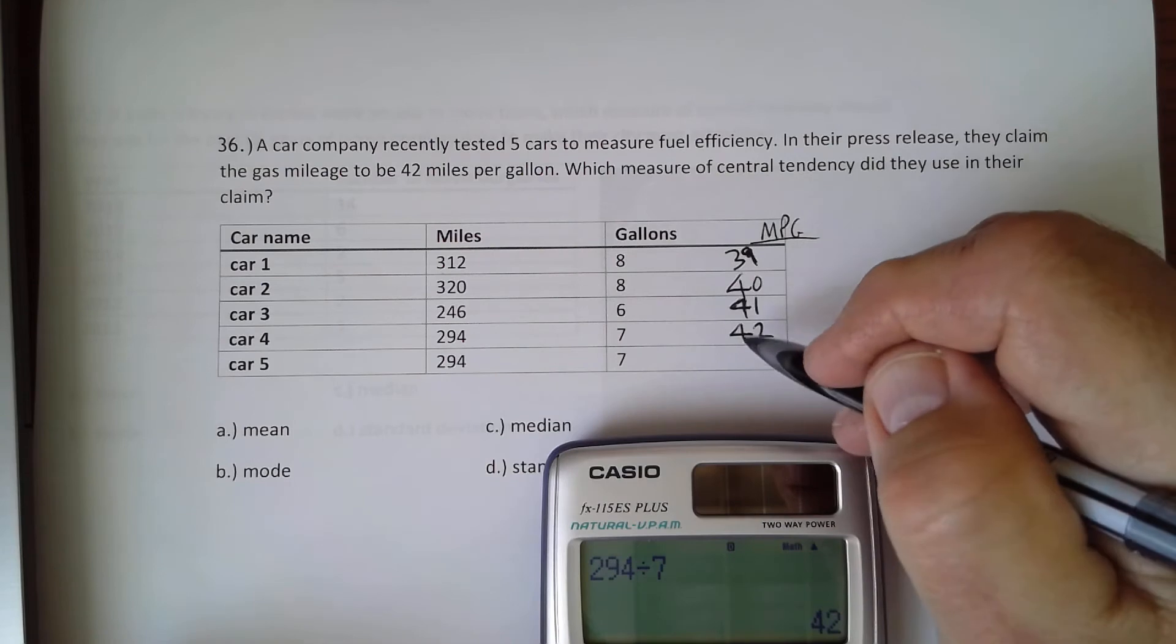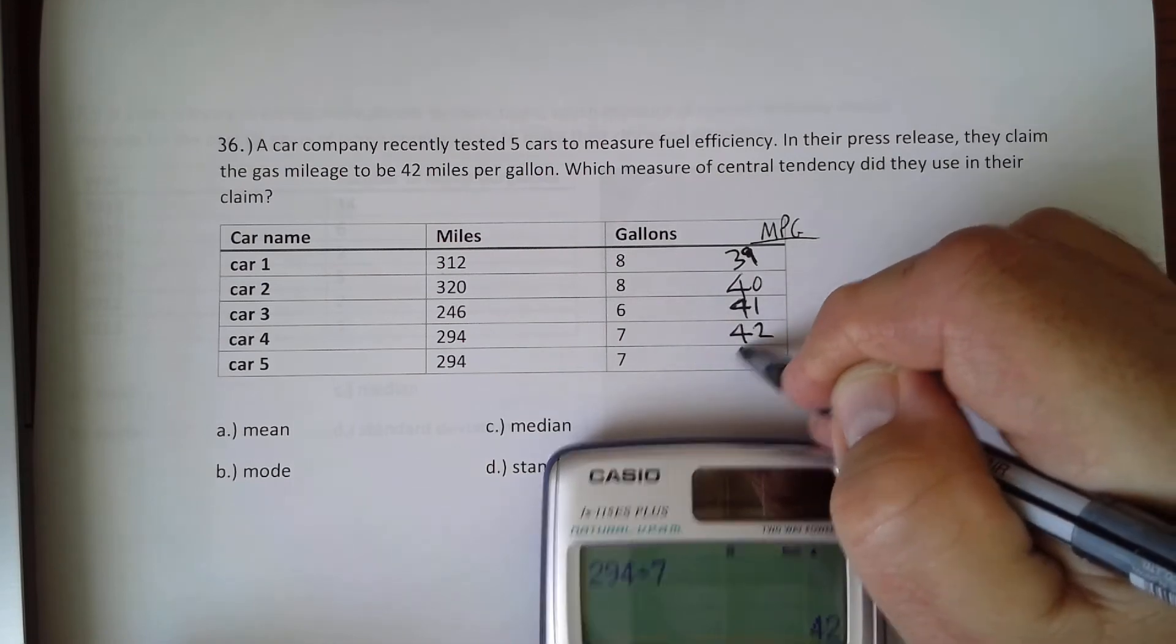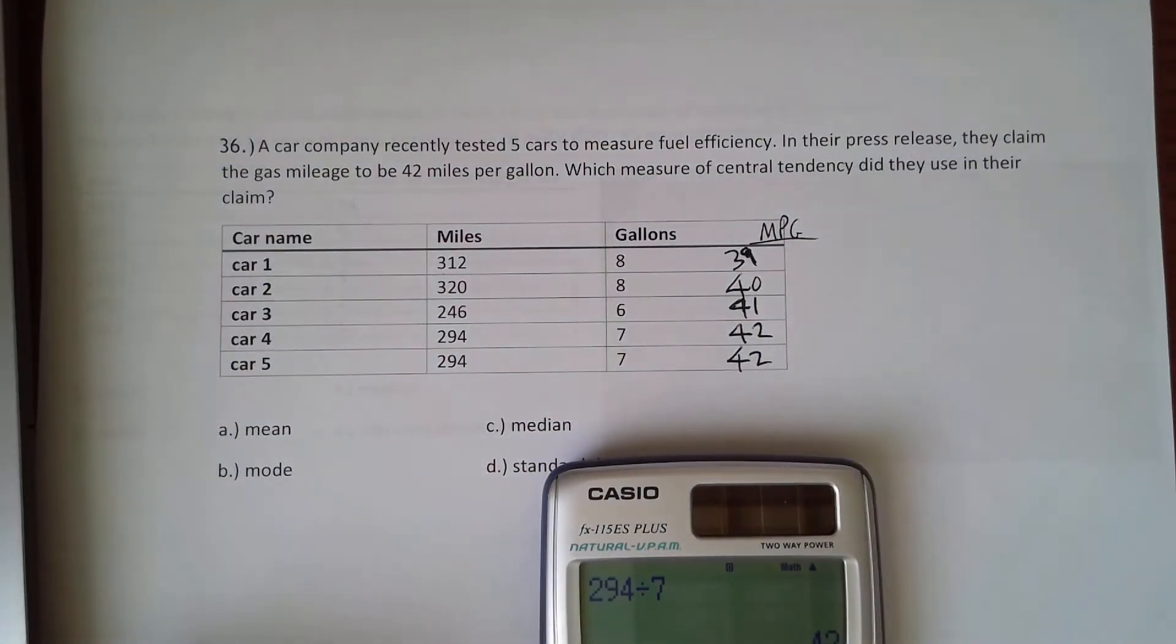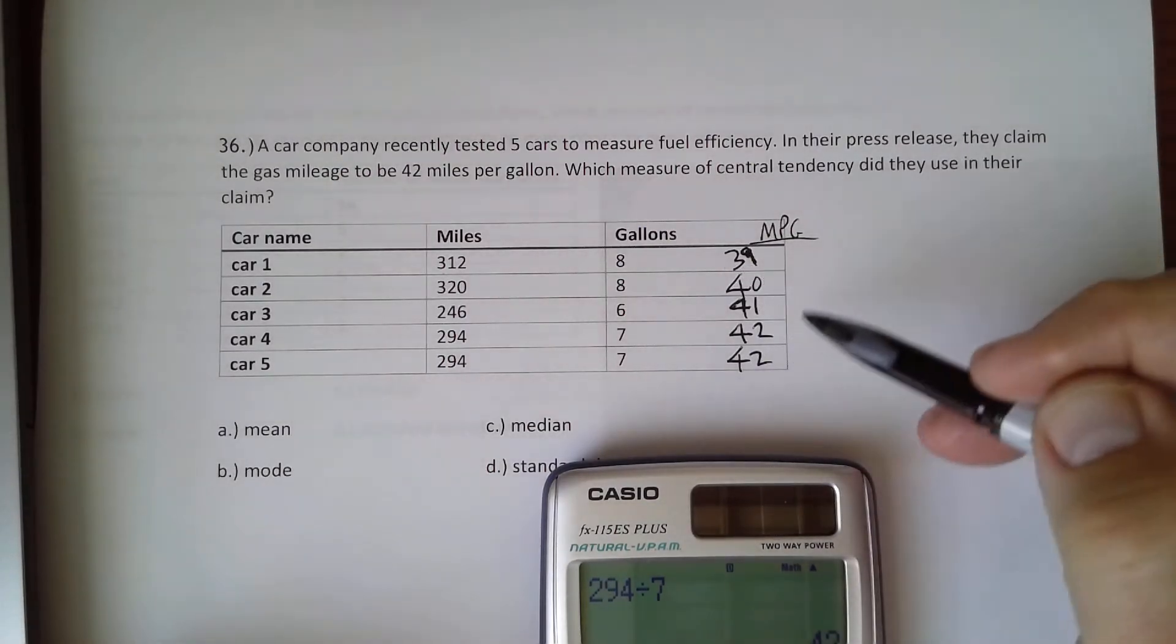And the last one, again, is 294 divided by 7, so we don't even have to do the math on that one. So we've calculated the miles per gallon for each of these cars.